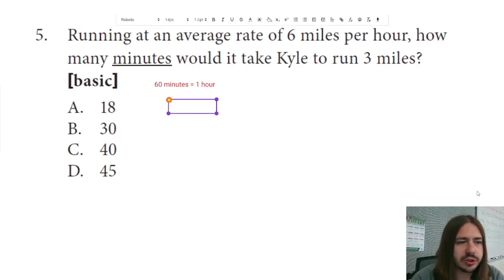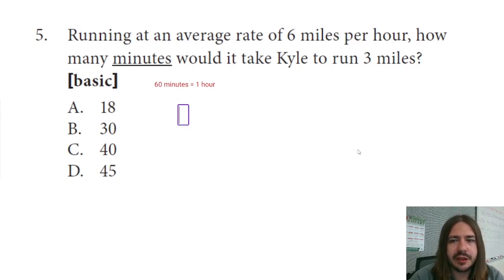We're going to set up a proportion here. We're going to relate the miles to hours. So if at the beginning it says running an average rate of six miles per hour, they run six miles per one hour.